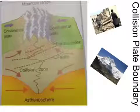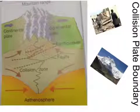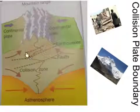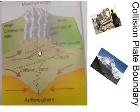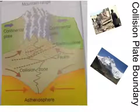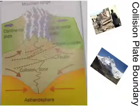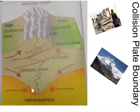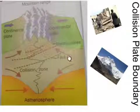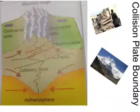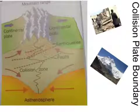This is a collision plate boundary, and this is what happens when two continental plates start to move together. There will always be a series of faults or potential fractures in the rock. Because both are continental plates, they are of the same density, so one cannot subduct underneath the other — they just continually push against each other. This leads to a rise in the middle, so fold mountains will occur and it starts to force the mountains upwards.